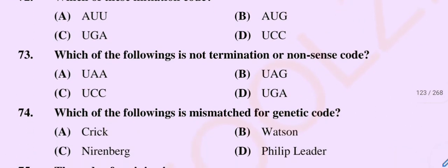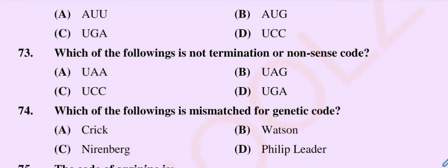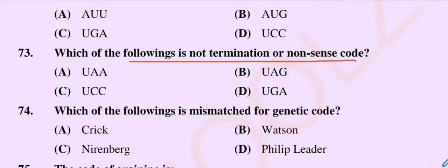Question number 73: Option A: UAA, Option B: UAG, Option C: UCC, Option D: UGA. So the correct option is Option C, UCC.